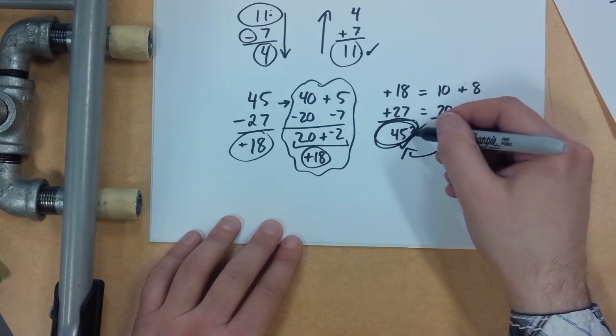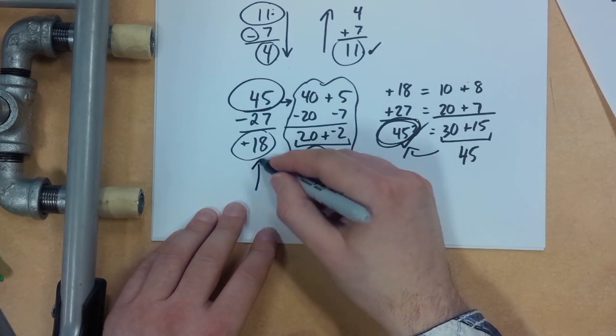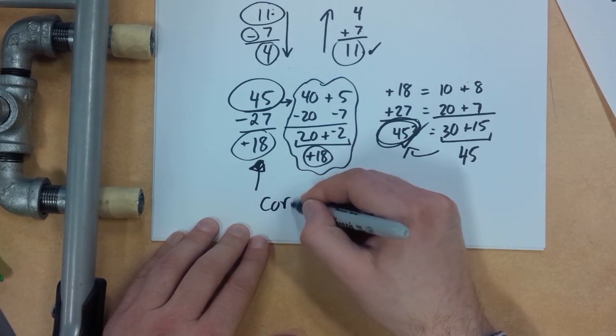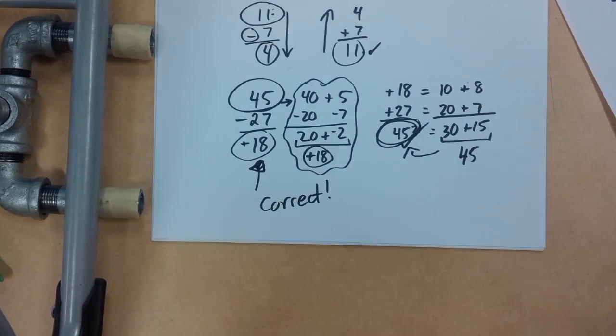And because this is 45 and this is 45, they're the same. That means that this original answer is correct. Crazy. And that's how you check subtraction.